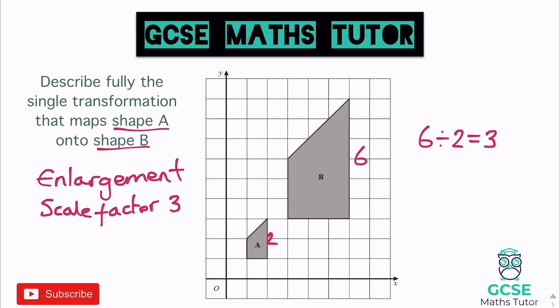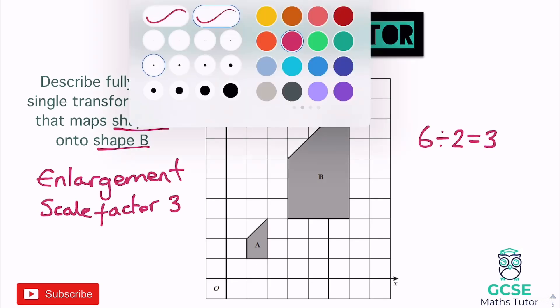If it were the other way around — from B down to A — the scale factor would be one third, since two divided by six is one third. But since the question says A to B, we don't need to worry about that. The scale factor is three.